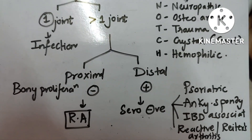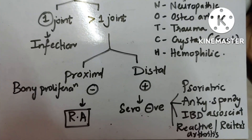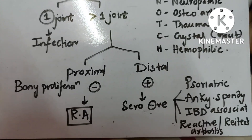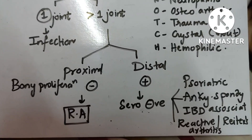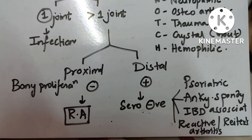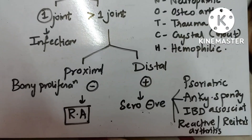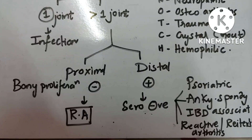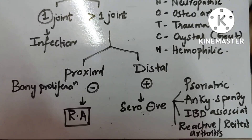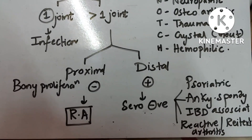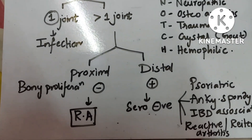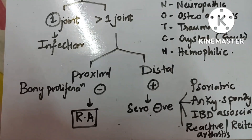In rheumatoid arthritis the rheumatoid factor is positive. When the rheumatoid factor is negative, it is called seronegative arthropathy. Examples of seronegative arthropathy follow the mnemonic PAIR: Psoriatic arthritis, Ankylosing spondylitis, IBD-associated spondyloarthritis, and Reactive arthritis. These four are rheumatoid factor negative, whereas rheumatoid arthritis is rheumatoid factor positive, as the name suggests.